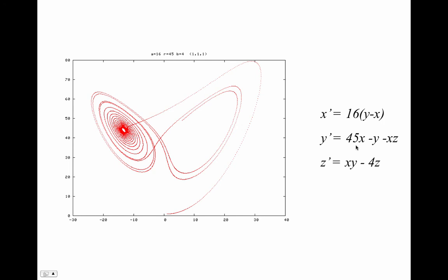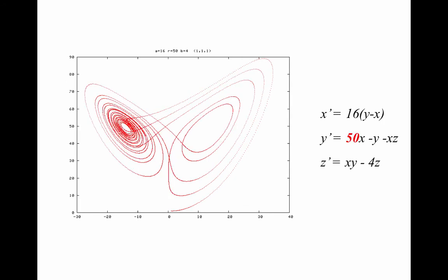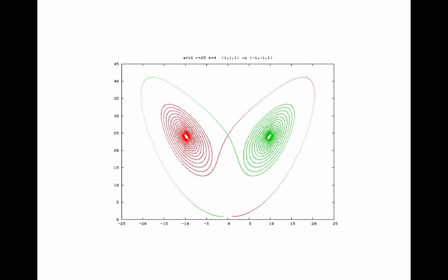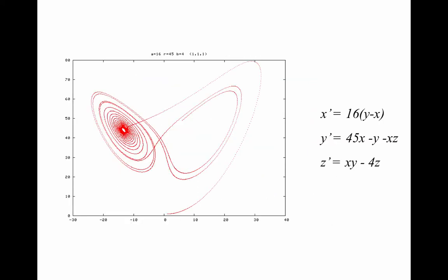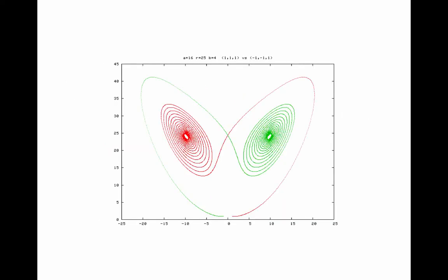What do you think will happen to the convection rolls if we turn up the heat? They get bigger, not surprisingly, because there's more convection. Flipping back and forth between these two slides you can see the difference — notice the vertical scales are different. What if we turn the burner down? The convection rolls die out. The red and green represent two different initial conditions in the basins of attraction of two different fixed points. So somewhere between R equals 25 and R equals 45, there's been a bifurcation from a chaotic attractor to two attracting fixed points.